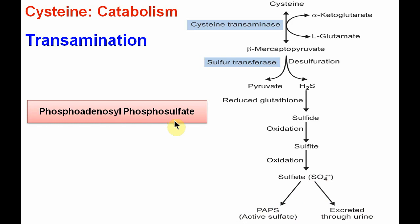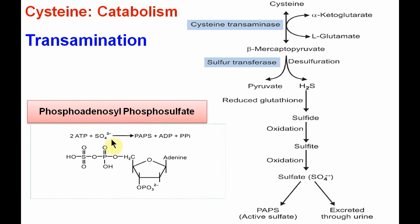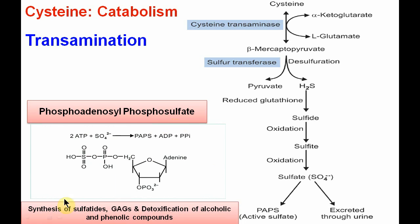PAPS — phosphoadenosine phosphosulfate — is the active sulfate, synthesized with the help of ATP. The importance of active sulfate is that it helps in the synthesis of sulfatides, glycosaminoglycans such as dermatan sulfate and keratan sulfate, and in detoxification of alcoholic and phenolic compounds.